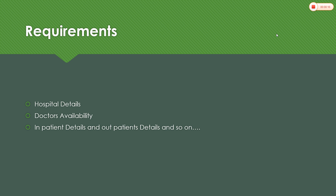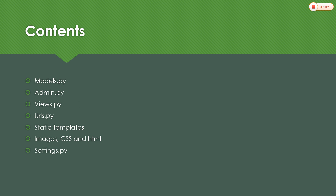So what are the requirements? We need to know the hospital details, whether the doctor is available for a particular disease in that hospital or not, inpatient and outpatient details, and number of beds, etc. For this we are going to modify the files: models.py, admin.py, views.py, urls.py, and we will use the static templates concept along with settings.py.